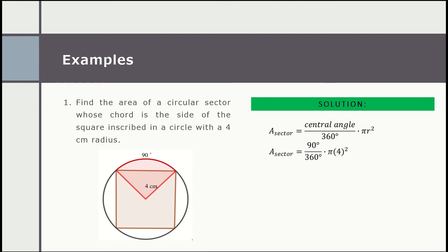The lowest term for 90 over 360 is 1 over 4. Then we have to simplify 4 squared. 4 squared is equal to 4 times 4, which is 16.